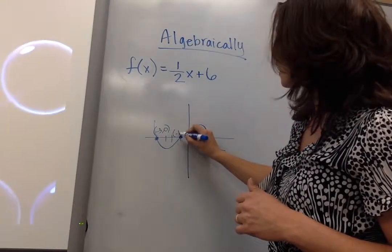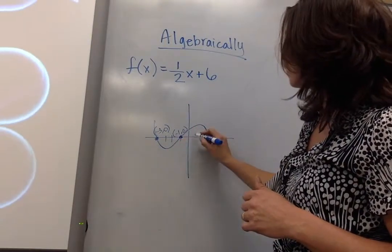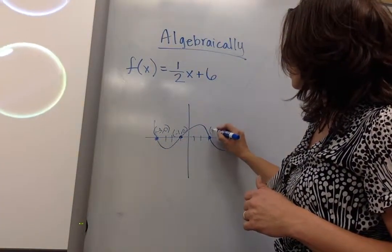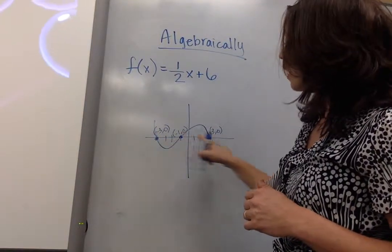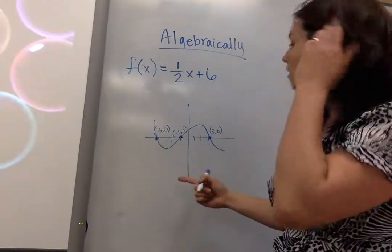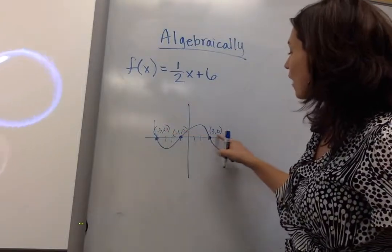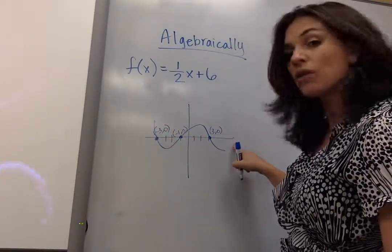At this point, I have negative 1, 0, and at this point here, I have 3, 0. So I can notice a pattern here. I notice that all my y values on my roots are 0.